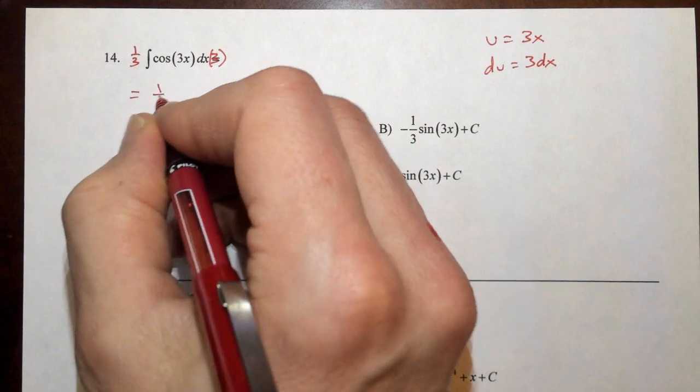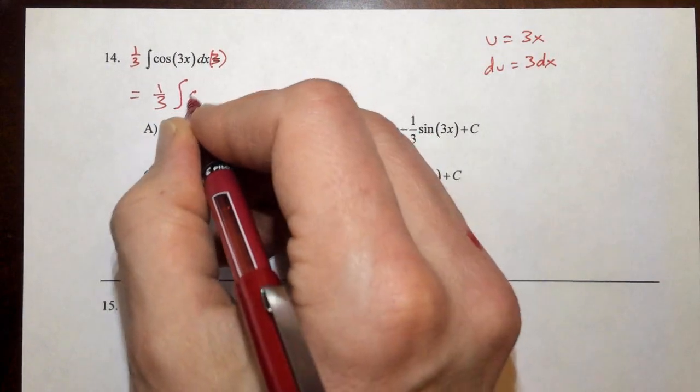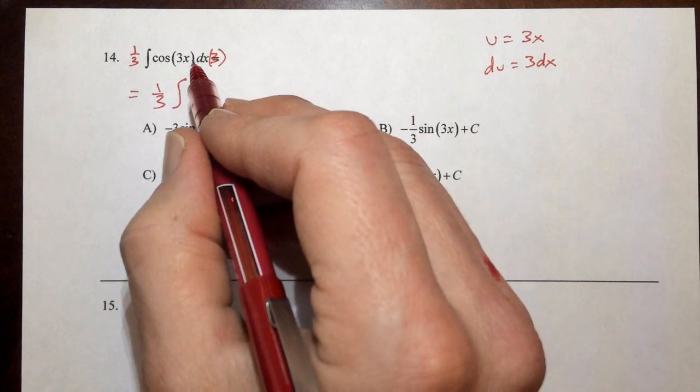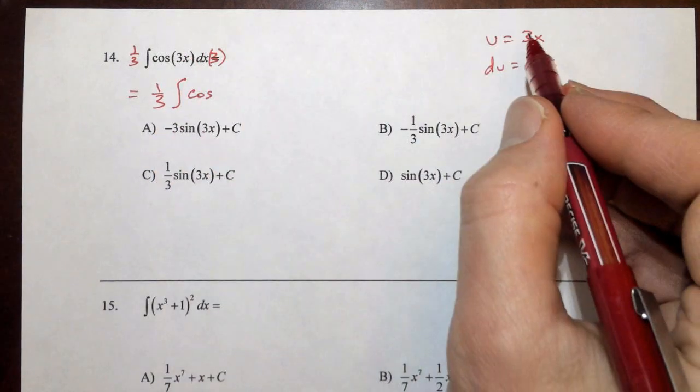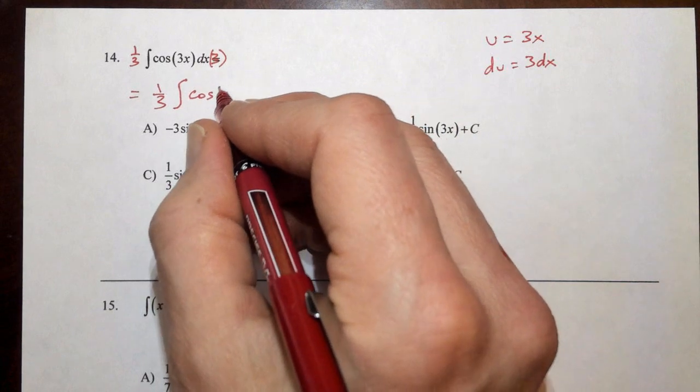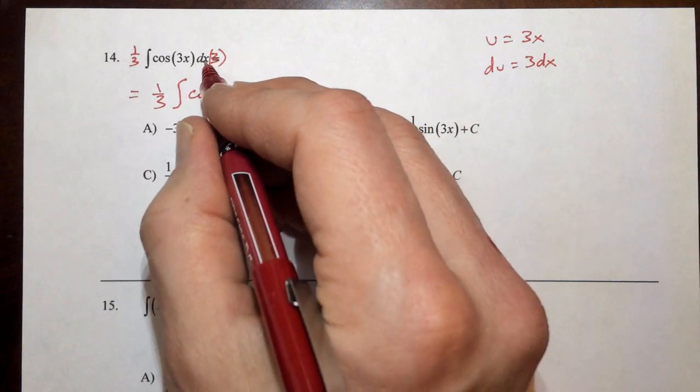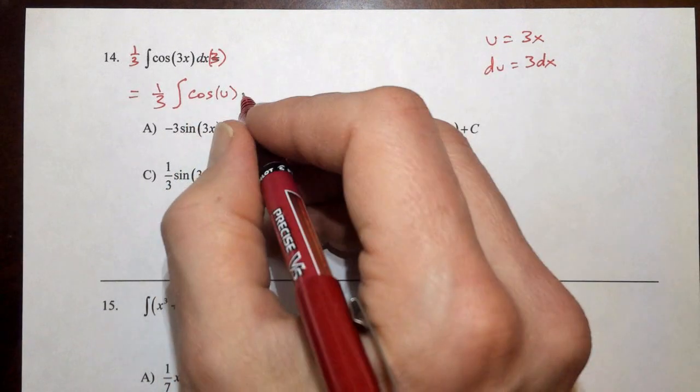This will be equal to one-third antiderivative cosine. Now we do our substitution. 3x is out and u is in. Then 3 and dx are out and du is in.